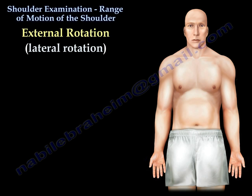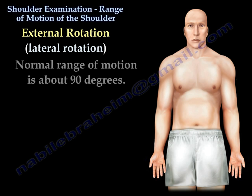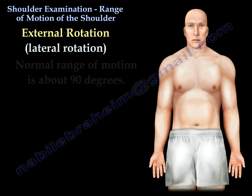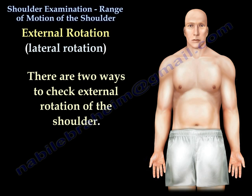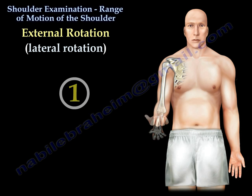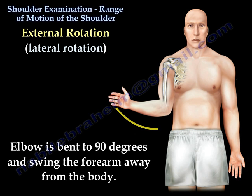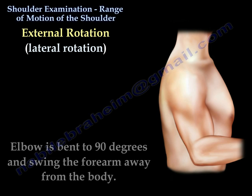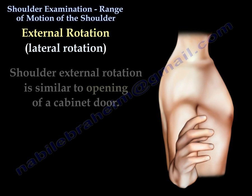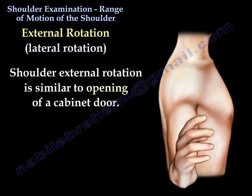External rotation, or lateral rotation, has a normal range of motion of about 90 degrees. There are two ways to check external rotation of the shoulder. The first way is to bend the elbow to 90 degrees and swing the forearm away from the body. Shoulder external rotation is similar to opening a cabinet door.